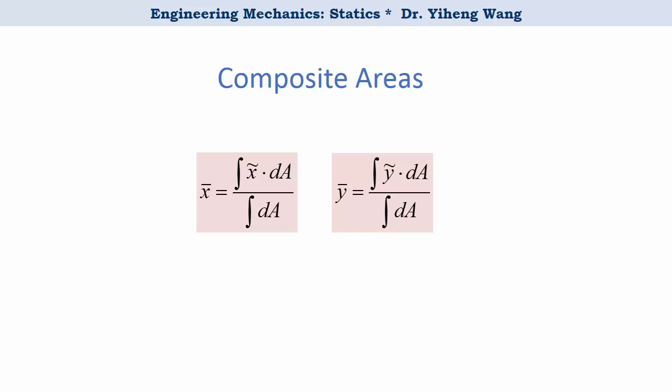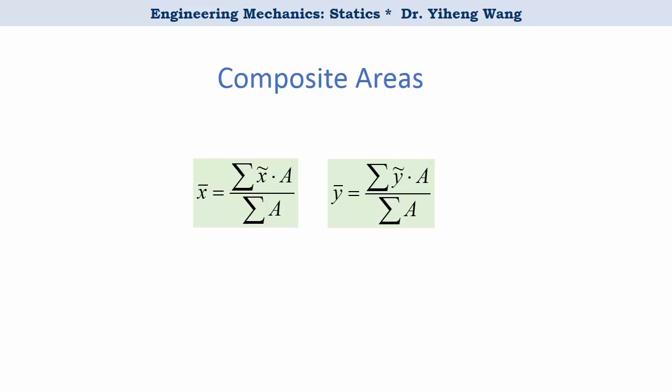Therefore, for a composite area that is made up of a countable number of simpler areas, all we need to do is to replace the integration sign in these two equations with summation sign. And now we have the formulas to calculate the centroid for a composite area.